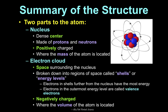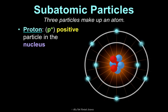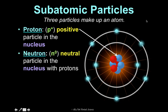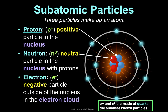The three subatomic particles that make up an atom: protons, abbreviated p+, are the positive particles located in the nucleus. Neutrons, abbreviated N0, are neutral particles — not positive or negative — also in the nucleus. Protons and neutrons are made of quarks, which are our smallest known particles at this time, so you can actually further subdivide protons and neutrons into quarks. Electrons, abbreviated e−, are negative particles outside the nucleus in the electron cloud.